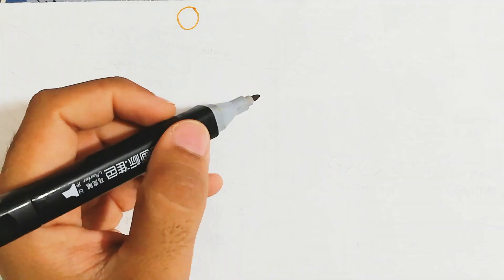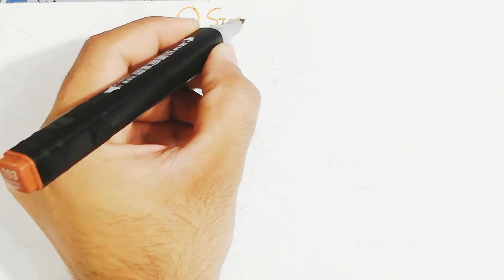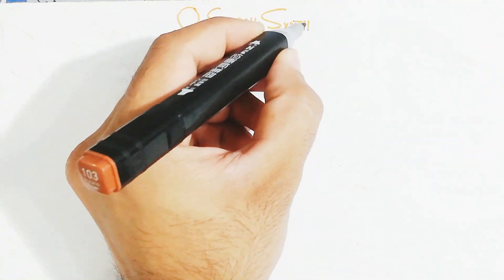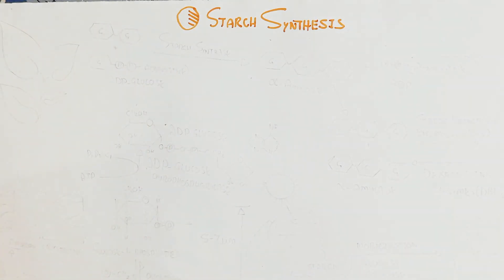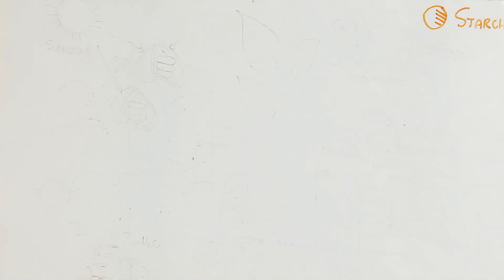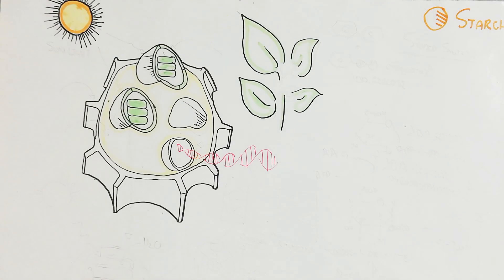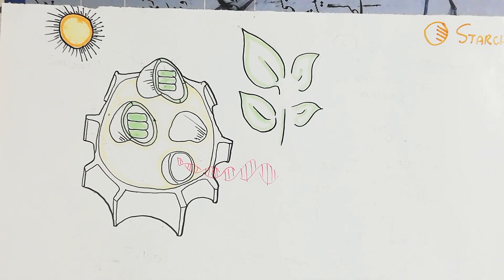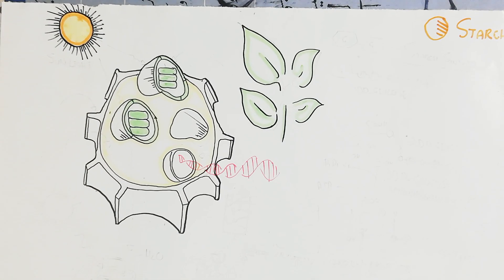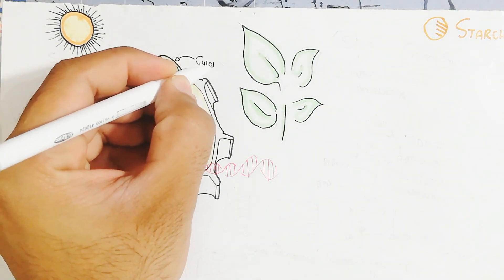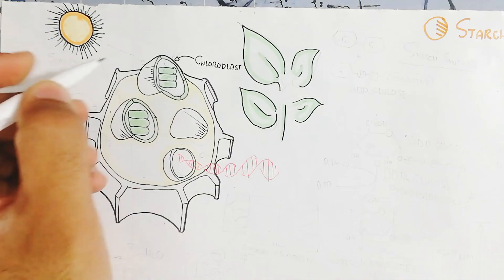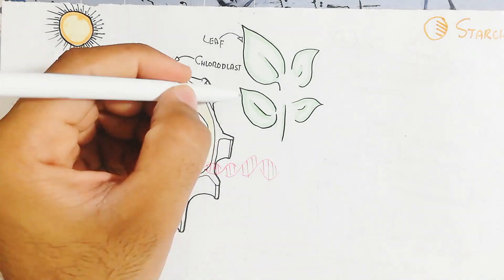In this video we will understand about starch synthesis. Starch is made up of amylose and amylopectin, which are chains of glucose with higher molecular weight. The unit of glucose polymerizes, and in the plant cell the chloroplast is used for photosynthesis to produce glucose.